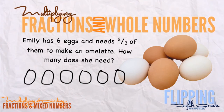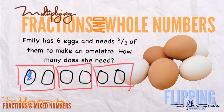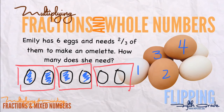Six divided by three is two, so it's going to make three groups of two. Now we need two out of those three groups, and I'm just going to use color here to illustrate — we have one, two, three, four. She needs four out of those six eggs to make an omelet, and that's the visual of what we are doing when we're multiplying fractions by whole numbers.